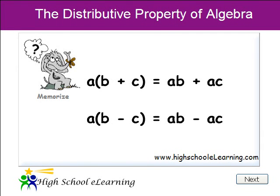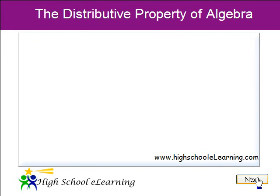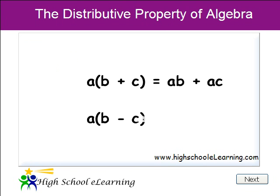Let's learn about the distributive property of algebra. The distributive property states a times b plus c equals a times b plus a times c, and a times b minus c equals a times b minus a times c.